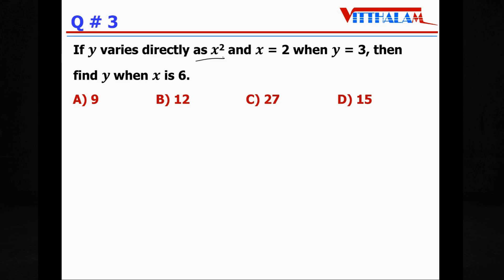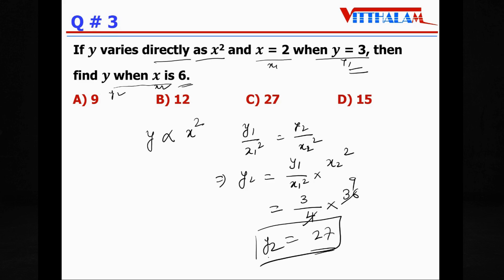Question 3: If y varies directly as x², and x = 2 when y = 3, then find y when x = 6. So y varies directly as x², therefore we will say y₁/x₁² = y₂/x₂². What do we have to find? x₁, y₁ is given, we have to find y₂, x₂ is given. So let's keep y₂ = y₁ × (x₂²/x₁²). So y₁ is 3, x₁ is 2, 2² is 4, into x₂², x₂ is 6, 6² is 36. Simplify: 9/4 × 36, 4s into 36 is 9, 9 × 3 is 27. Therefore y₂ is 27. Answer C.